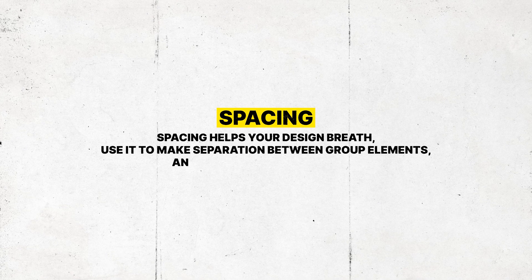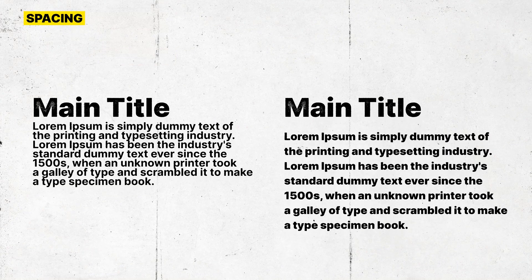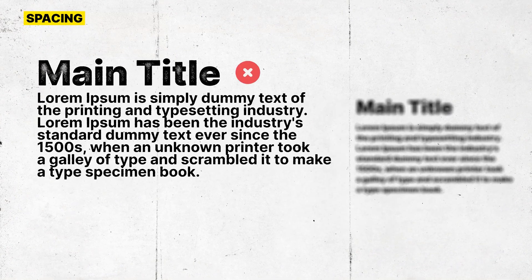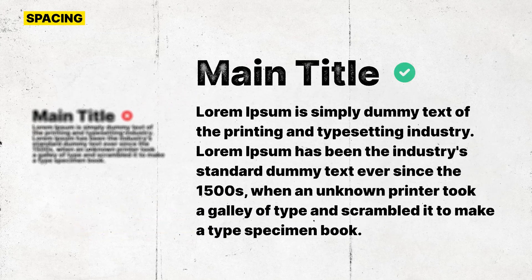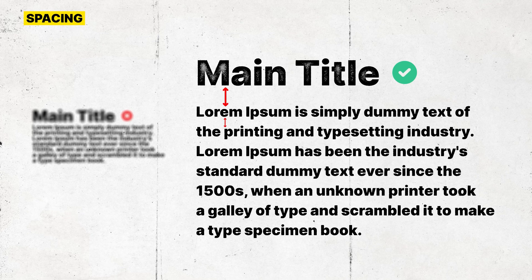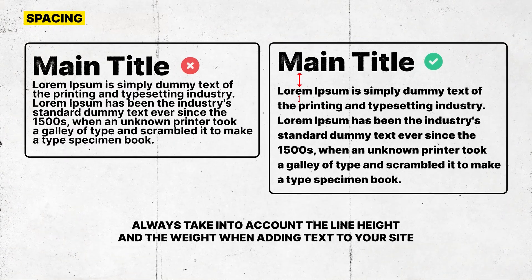In our next example, we have spacing. Spacing is one of those subtle things in web design that can make or break your design. The text on the left is clearly more difficult to read due to the little space between each line and also because of its weight — it is too heavy. The text on the right, on the other hand, is much easier to follow due to a good amount of white space and a less heavy weight. So always take into account the line height and the weight when adding text to your site.